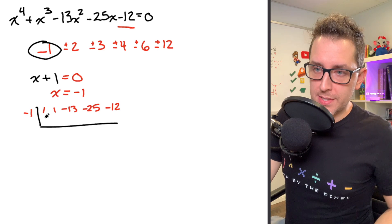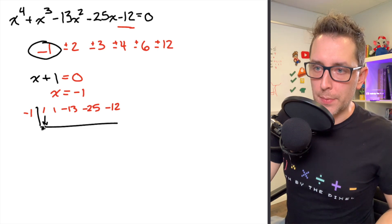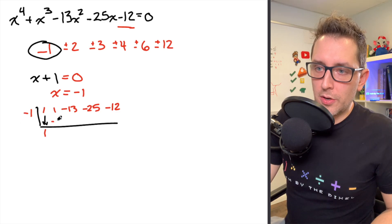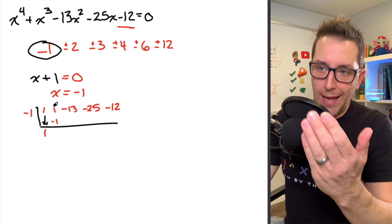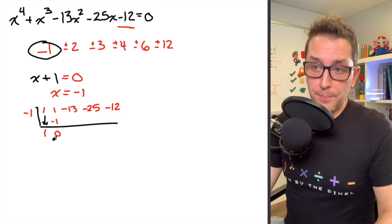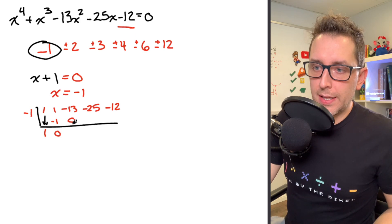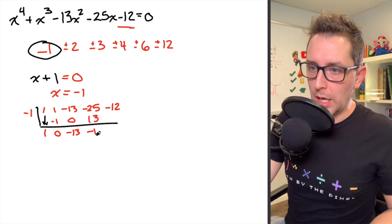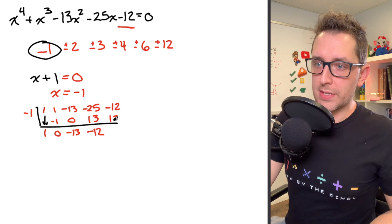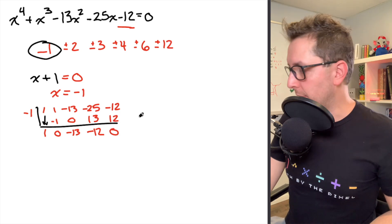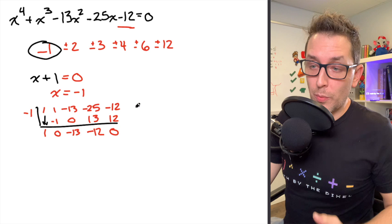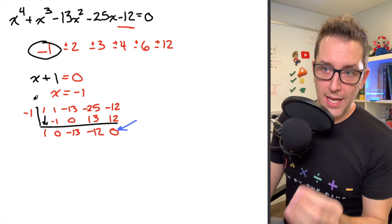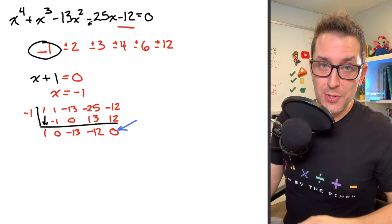The first step of synthetic division is to bring that 1 down and place it at the bottom. Then I multiply it by negative 1 and place the result underneath my second coefficient. I add straight down — 1 plus negative 1 gives 0 — and I repeat this process over and over until I get to the end of the synthetic division table. If this is a process you haven't seen before, check out the linked video for an in-depth walkthrough. When you reach the end, you'll get a remainder of 0, which makes sense because we chose negative 1 since it gave us 0 when substituted into our polynomial.